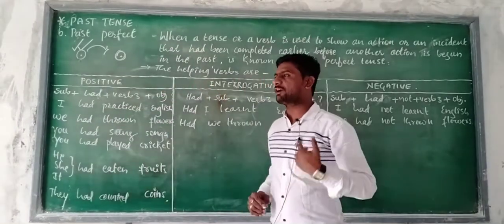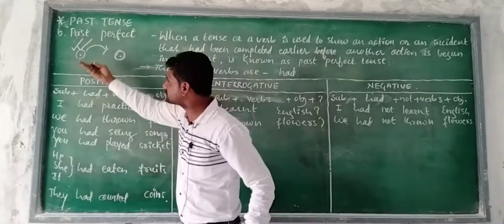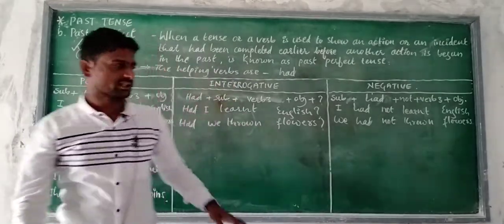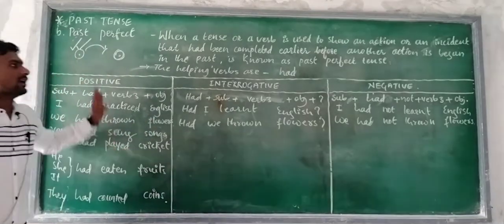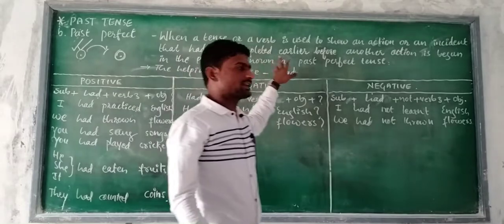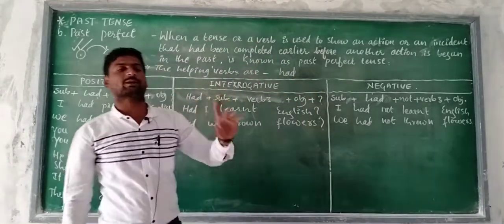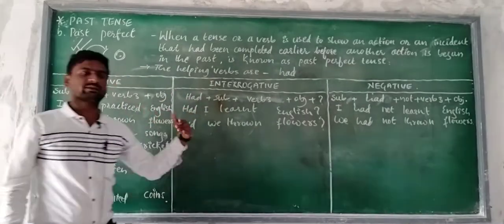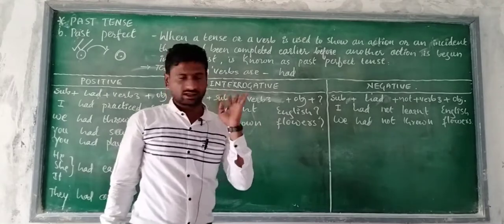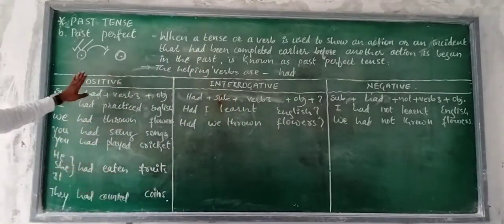That action had been completed or ended earlier, before any other action is begun — got it? That's why the helping verb of this tense is 'had.' We are going to see only a single helping verb, that is 'had,' and in the sentence the main verb position is Verb 3.